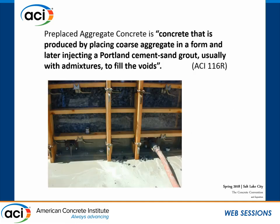ACI 116 defines pre-placed aggregate concrete as concrete that is produced by placing coarse aggregate in a form and then injecting Portland cement sand grout, usually with admixtures, to fill the void. The photo at the bottom is from a nuclear power plant in South Carolina that Tony's firm, Restruction, did, where they were demonstrating the efficacy of pre-placed aggregate concrete for some repairs to the plant. You can see the injection and the grout starting to come up. They used an acrylic form so you could physically see the grout going up.